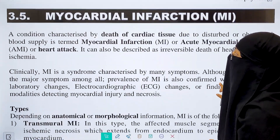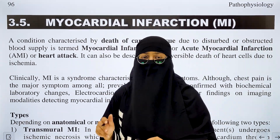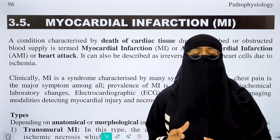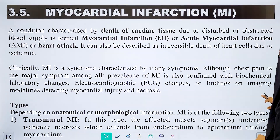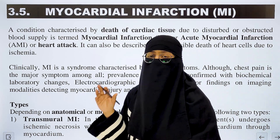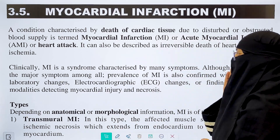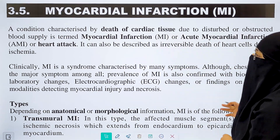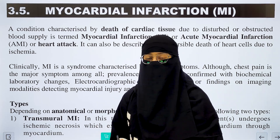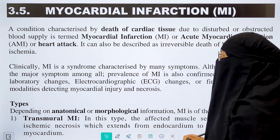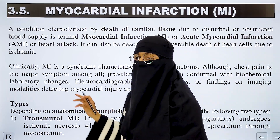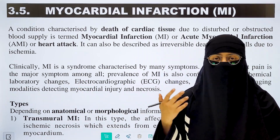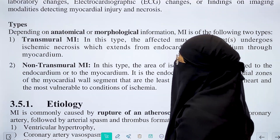Next, we will talk about myocardial infarction. Myocardial infarction is basically the death of cardiac tissue. It is mainly caused by a reduced blood supply, and can be described as the irreversible death of heart tissue due to ischemia and reduced blood flow.